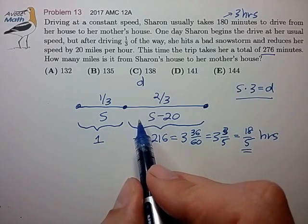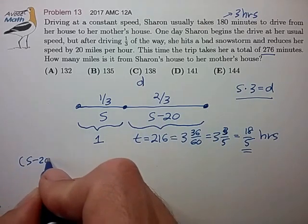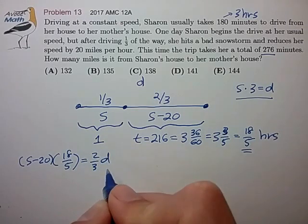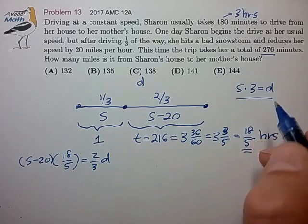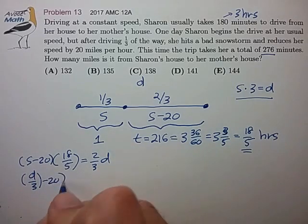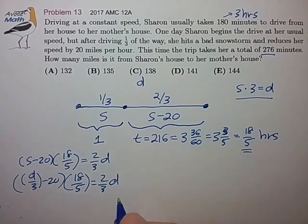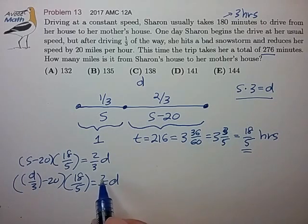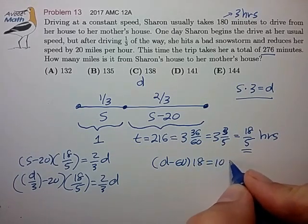And let's see if we can work out our rate times time equals distance for the second portion of the trip. We have rate times time equals distance. Okay, looks like we can substitute S for D over 3, minus 20 times 18 over 5, equals 2 thirds D. Looks like we can multiply both sides by 3, and both sides by 5.